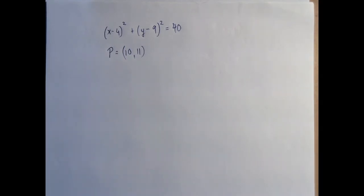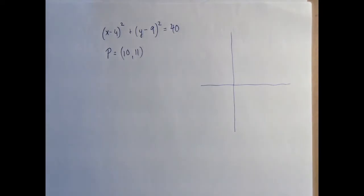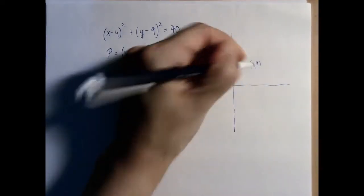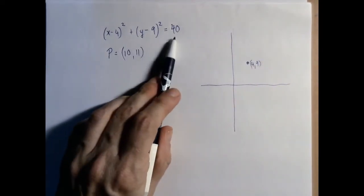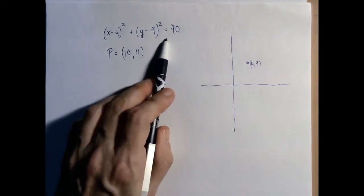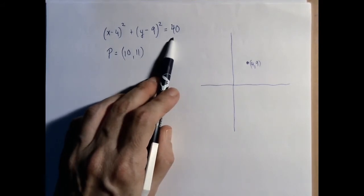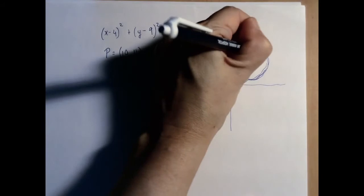So let's just sketch a picture before we start. The center is 4, 9, and the radius, square root of 40 is a little bit—40 is a little bit after 36, right? So the radius is 6 and change. Point P would be somewhere here.